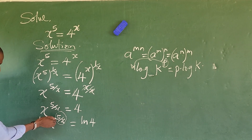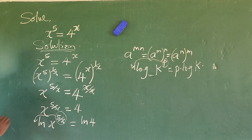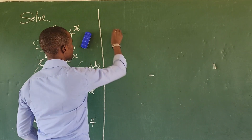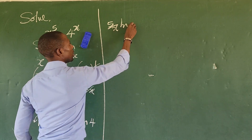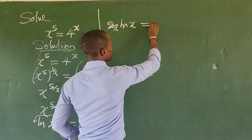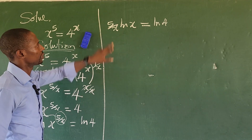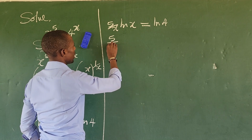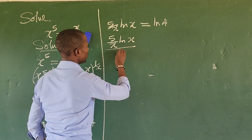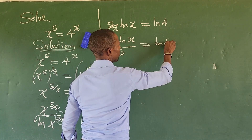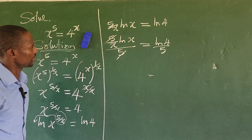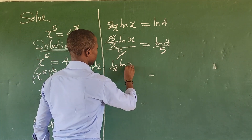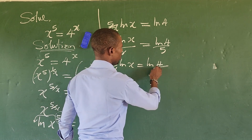So if we apply that, we move the exponent to the front. This gives us 5 over x times ln of x, equal to ln of 4. From here, we divide both sides by 5. This gives us 5 over x times ln of x, all over 5, equal to ln of 4 over 5. The 5s cancel, leaving us with 1 over x times ln of x equal to ln of 4 over 5.